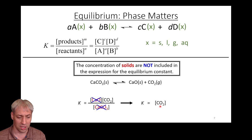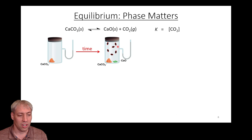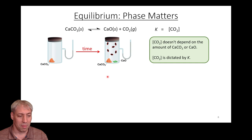Liquids are not included in the equation, neither are solids. This is a bit counterintuitive, particularly this example, because if we start with calcium carbonate CaCO3 and just let it sit over time, it's going to reach equilibrium — it's going to generate CO2 molecules plus some CaCO3 and CaO. Note it's not going to separate in nice piles; this is just a depiction. It basically says it's going to reach an equilibrium condition, and what's interesting is it doesn't depend on the amount of CaCO3 or CaO, because K equals CO2.